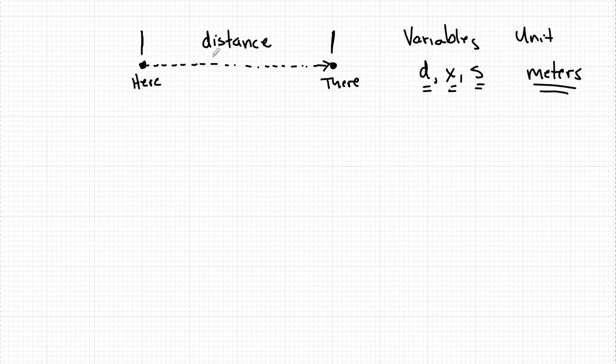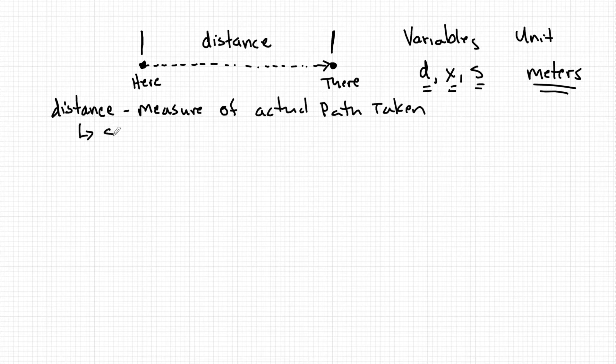This is going to be the distance traveled from this object from a starting position to an ending position. So distance is going to be a measure of the actual path taken. And we call this a scalar quantity because it does not have any direction associated with it.